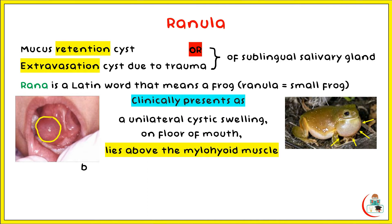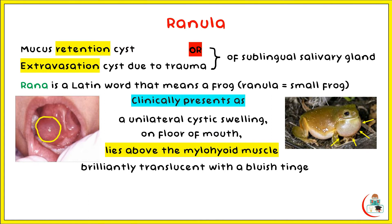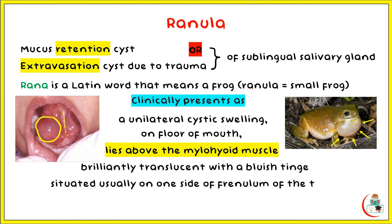It is brilliantly translucent with a bluish tinge due to thin mucosal covering. It is situated usually on one side of the frenulum of the tongue, pushing it upwards.